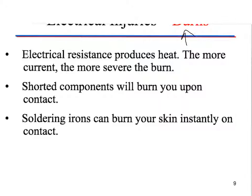Electrical injuries — burns. Electrical resistance produces heat; the more current, the more severe your burn. Resistance is something acting against something else: if you rub your hands together really fast, the resistance between your two hands starts to produce heat — that's exactly what electricity does. Current flows through your body, your body produces resistance, and it's going to produce heat, which gives you a burn. Components that are shorted out will burn you as soon as you touch them. Some components we use do get shorted out and get hot — not enough to burn you badly, but you'll definitely feel the heat.